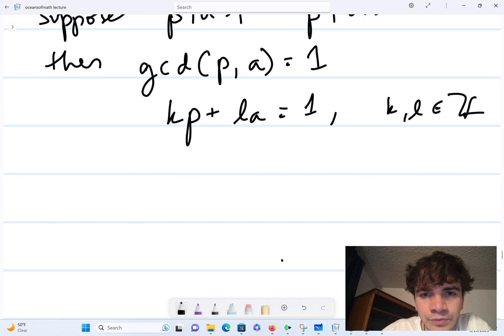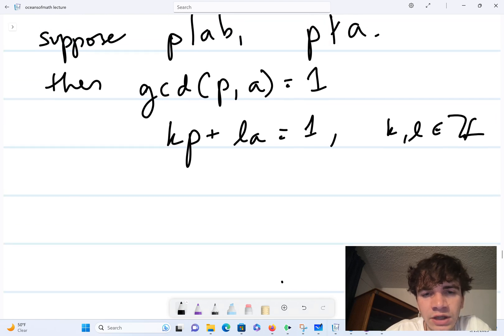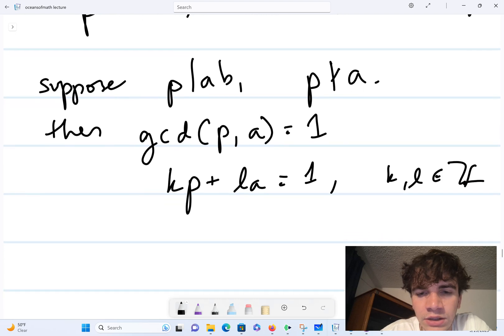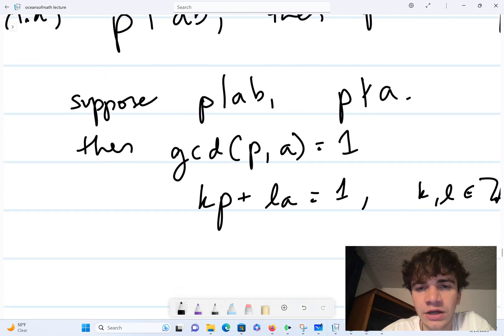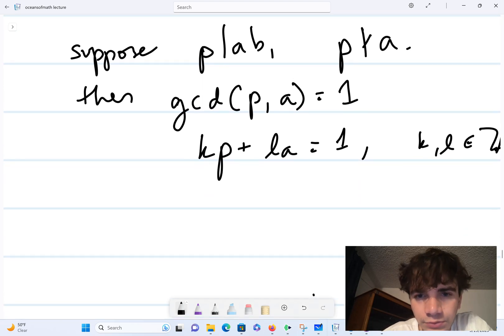So we know that there's a solution kp plus la is equal to one. Now how do we leverage this to our advantage? Since p divides ab, let's multiply both sides of this equation by b. So kpb plus lab is equal to b.